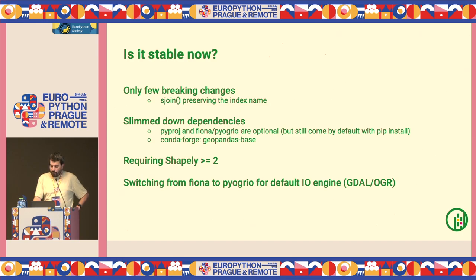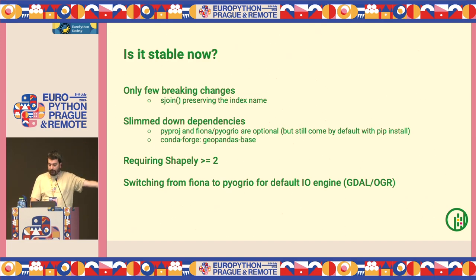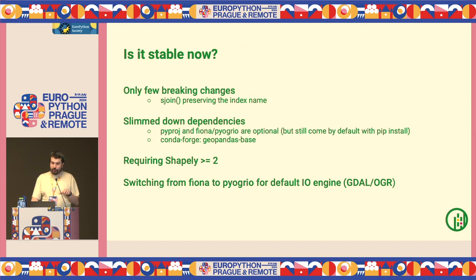We now require Shapely 2.0. We've switched the default engine for reading and writing files from Fiona — which was there since 2013 — to Pyogrio, which is much faster. It's fully maintained by the GeoPandas team, unlike Fiona which is an external project, and it's designed to be used with GeoPandas, though it occasionally leads to slight differences in how files are read.